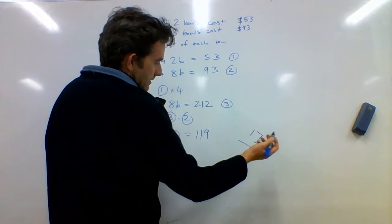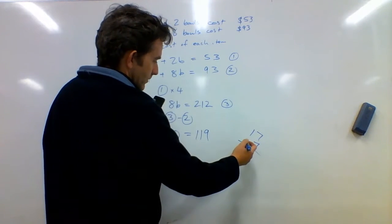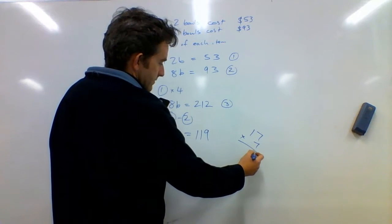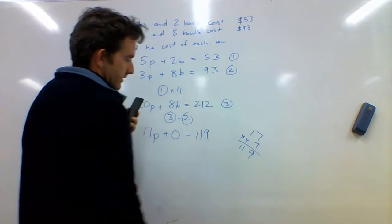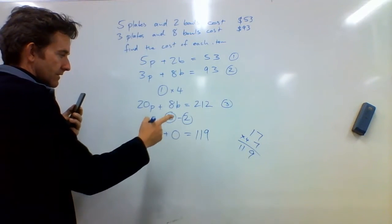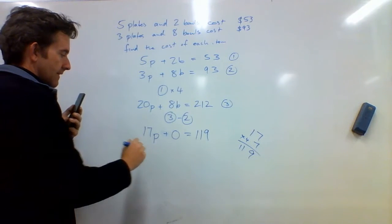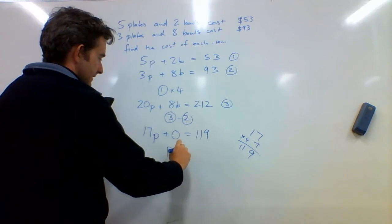17 times 7, and you can use your calculator to do this just to see if it works. 7 sevens are 49, 1 seven is 7, plus 4 is 11, so 119. Great. So 17 goes in there 7 times, that means that p must equal 7.